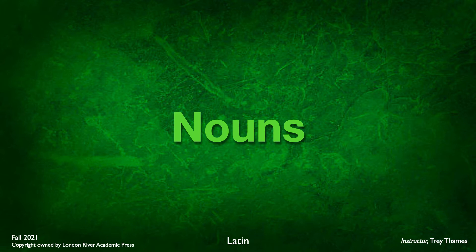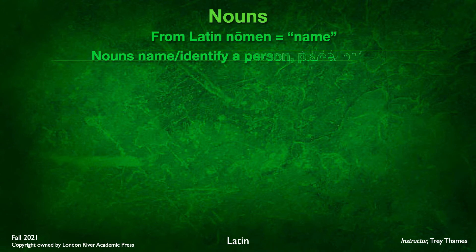Nouns. We talked about verbs in Chapter 1. If there's a second most important word in a sentence behind verbs, it would be the nouns, because nouns are the subjects of the action of verbs, the objects of prepositions, and the direct objects that are being acted upon by the verb. The word noun comes from the Latin word nomen, which means name. Nouns name or identify a person, place, or thing.